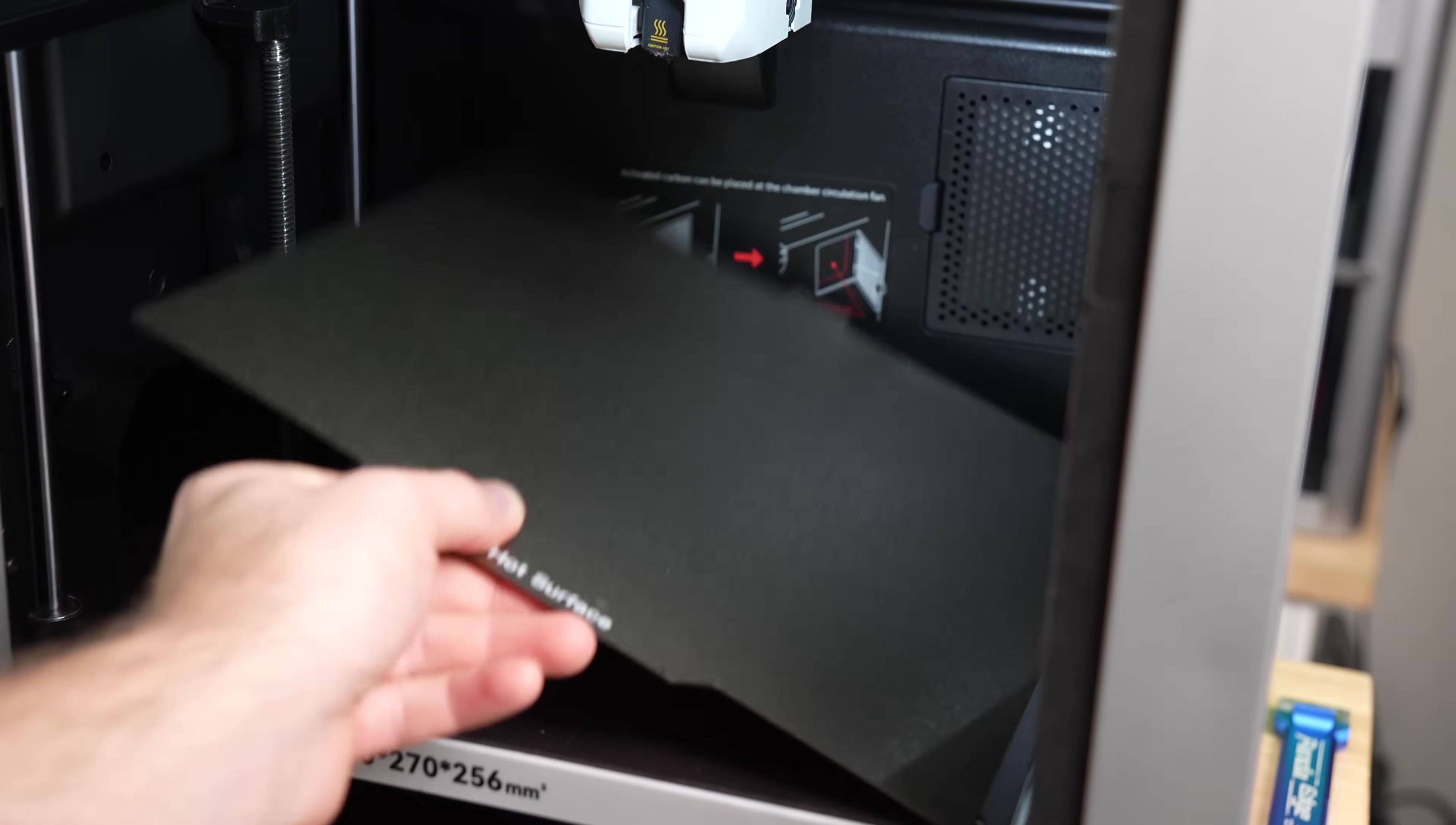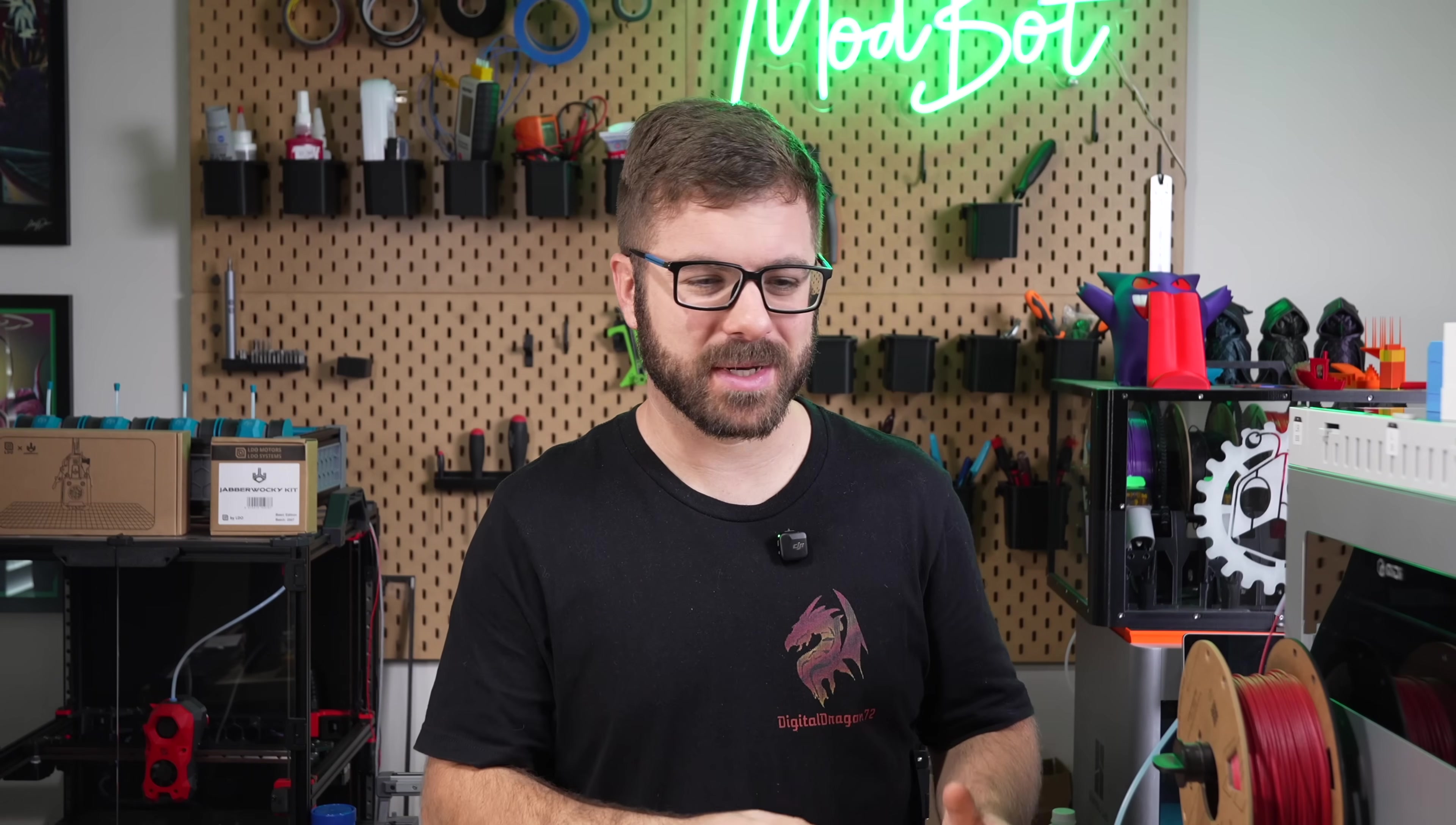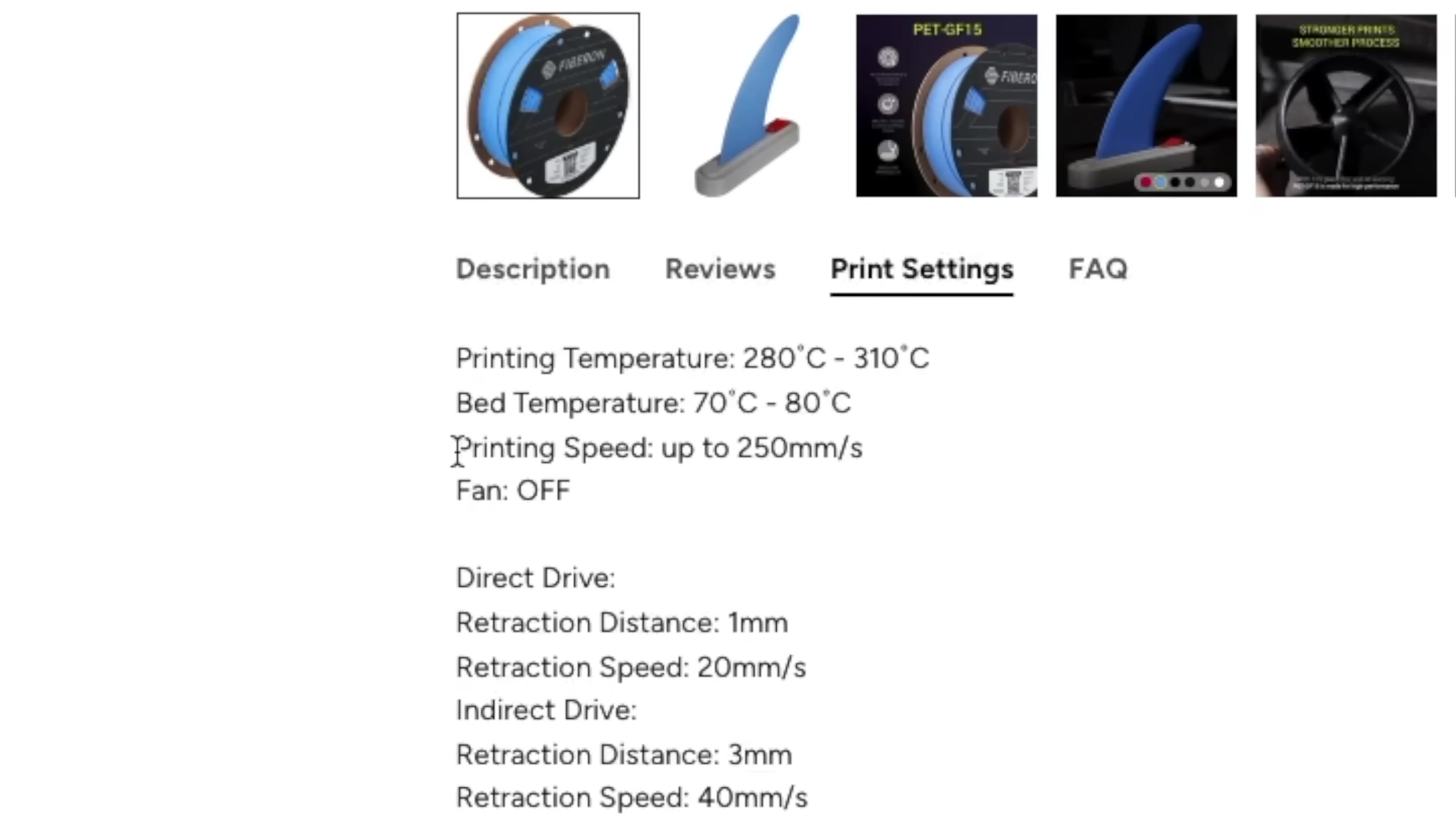There isn't a bed material recommendation, but I'm using powder-coated PEI, which is what I used in my previous testing. You'll need to have a heated bed, which has also been a standard for a really long time, and the range Polymaker recommends is between 70 to 80 celsius. There isn't a whole lot of additional info on print settings, other than you can print it up to 250 millimeters per second, which doesn't say much about the actual flow rate compatibility, and that the recommendation is to have the cooling fan off.